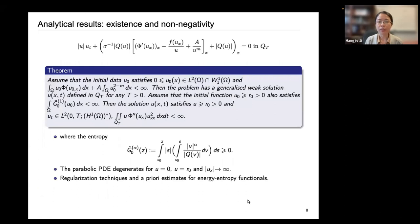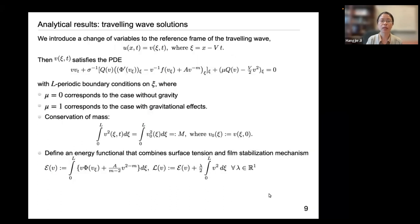Here we have the existence and non-negativity results for the PDE. We use regularization techniques and a priori estimates for energy and entropy functionals to handle the degeneracy of the parabolic PDE. In particular, we handle the degeneracy at the point where U becomes 0, when U becomes R0, and when the derivative function of U blows up.